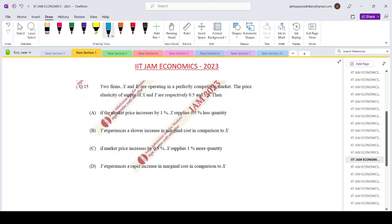Now let us come to question number 15 of the IIT Jam Economics 2023 question paper. Two firms X and Y operating in a perfectly competitive market. The price elasticity of supply of X and Y are respectively 0.5 and 1.5. So elasticity of supply for firm X equals 0.5.